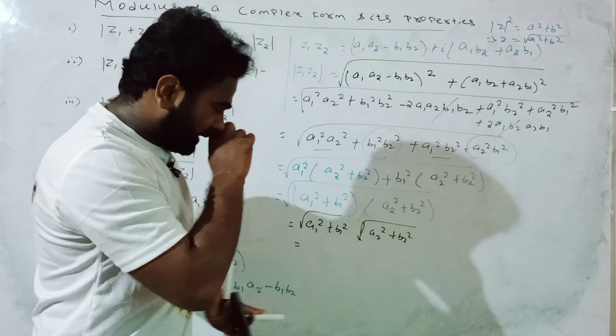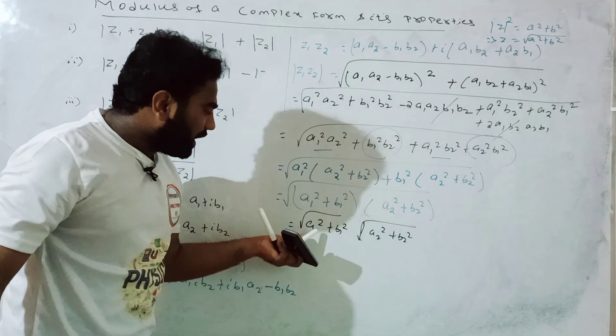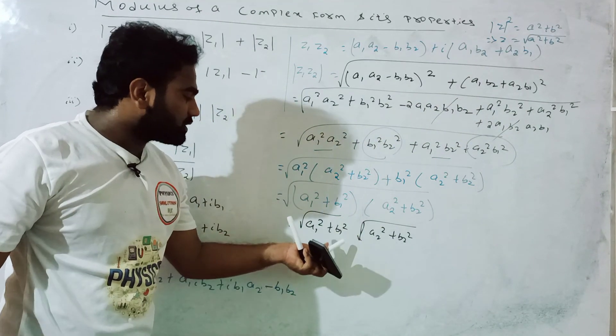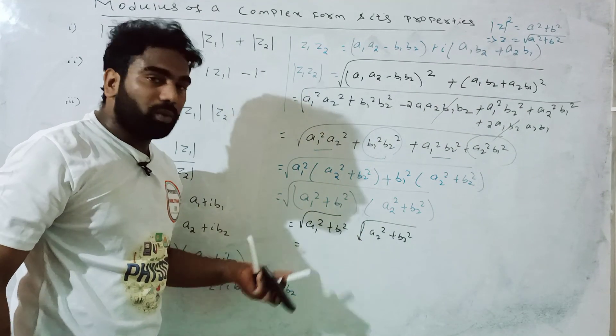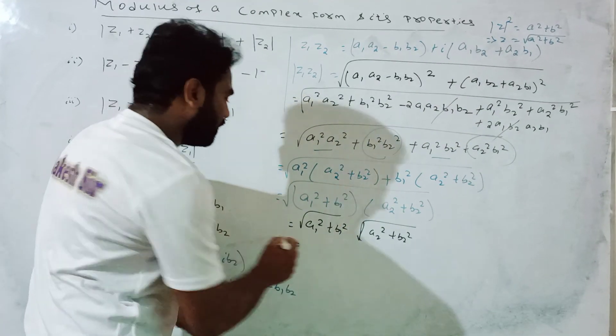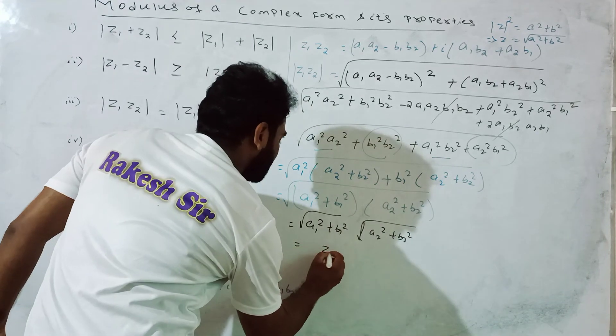The modulus of z1z2 squared equals (a1a2 minus b1b2) squared plus (a1b2 plus a2b1) squared, which equals (a1 squared plus b1 squared)(a2 squared plus b2 squared), confirming that the modulus of z1z2 equals the modulus of z1 times the modulus of z2.